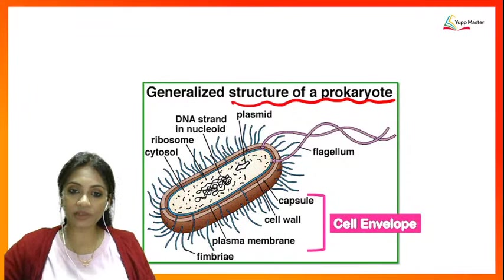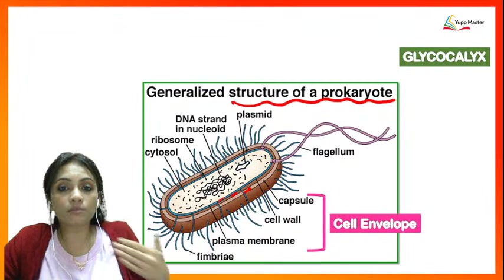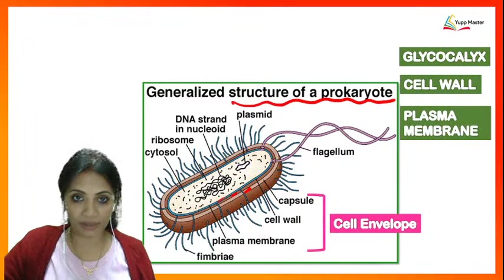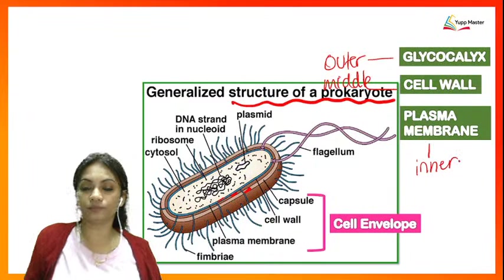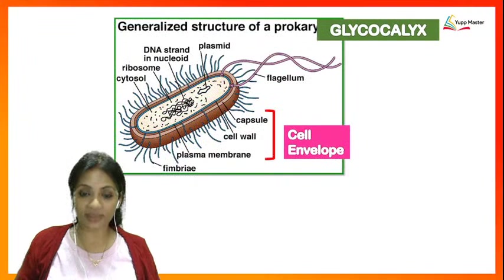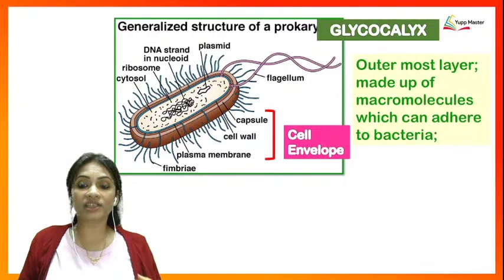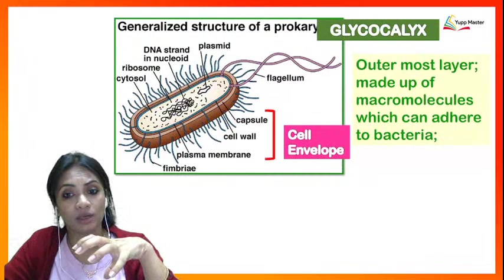The cell envelope has three layers: the outermost layer is the glycocalyx, the middle layer is the cell wall, and the innermost layer is the plasma membrane. The glycocalyx is made up of macromolecules which can adhere to the bacteria. Depending on thickness, if it is thin it is called a slime layer, and if it is thick it is called a capsule.